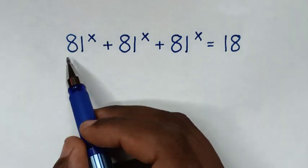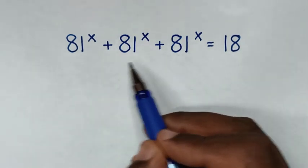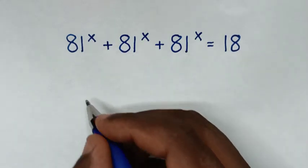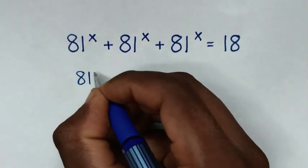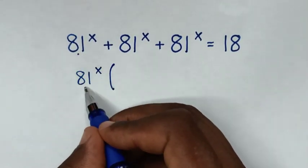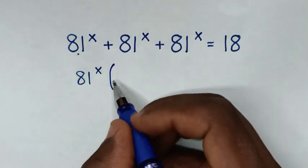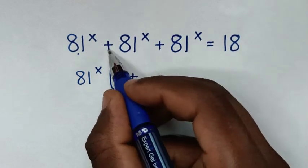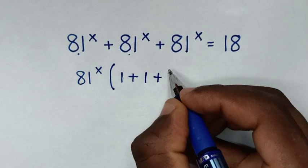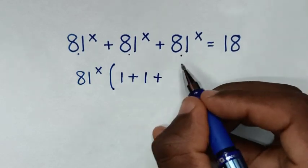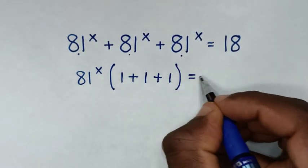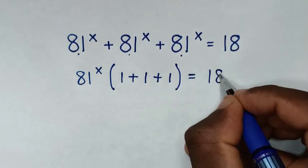Now, in the first step, from the left side, 81^x is common. So we'll take 81^x out of the bracket: 81^x divided by 81^x is 1, plus 81^x divided by 81^x is 1, and the bracket is equal to 18.